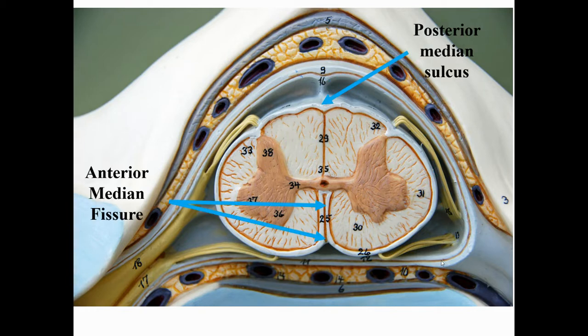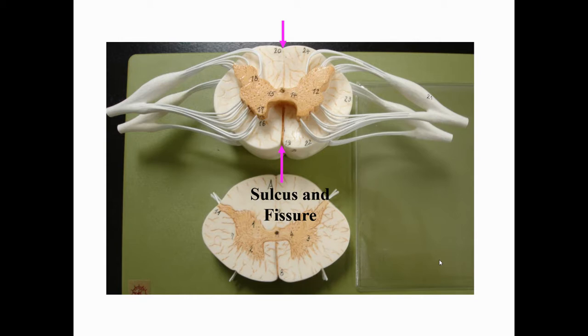There are also indentations on the spinal cord. On the posterior side, the indentation right in the center is not very deep, so it's called a groove or sulcus — this is the posterior median sulcus. On the anterior side, the groove is much deeper, going all the way into the spinal cord, so it's called a fissure — the anterior median fissure. You can see both on this model.